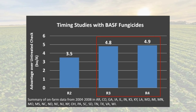Now looking at this graph, you may be thinking it looks like it doesn't matter whether it's applied at R3 or R4, and in either situation you're likely going to have success. But we reached out to Dr. Jason Bond, plant pathologist at Southern Illinois University Carbondale, and got some insight on why he thinks R3 is still the optimum timing for fungicide applications.